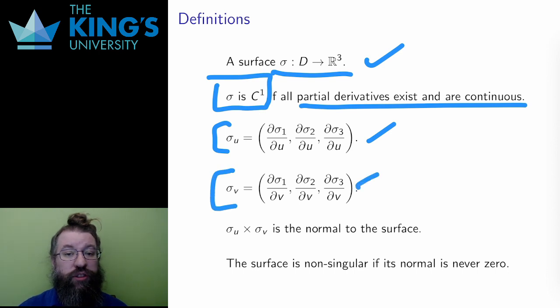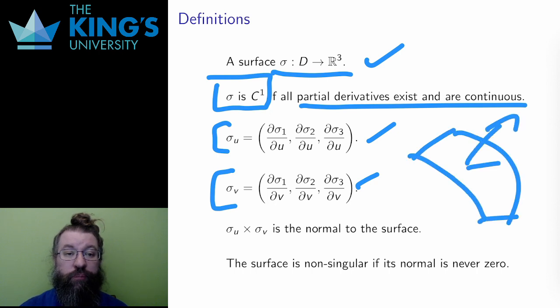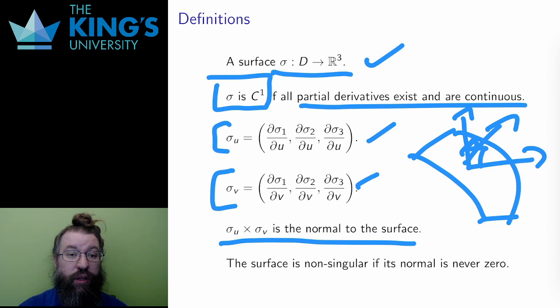These are local directions on the surface, just like the tangent to the parametric curve was a local direction of the curve. Since these two are local directions, their cross product is perpendicular to both of them, and being perpendicular to both directions, this cross product is locally perpendicular to the surface. That is, this cross product is the normal to the surface.